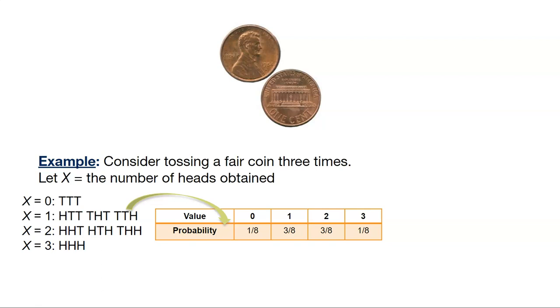X could be one or two, almost half the time, or three eighths. And then X could be three, all heads, just one time. And so this is our random variable.